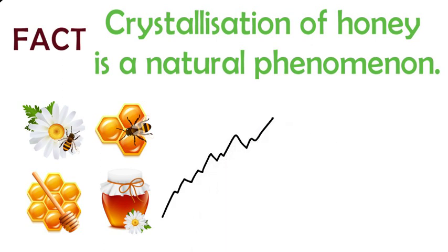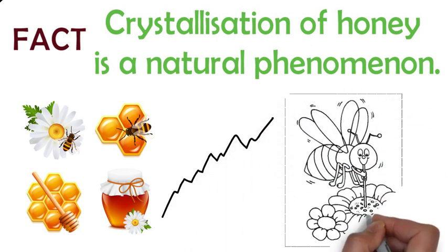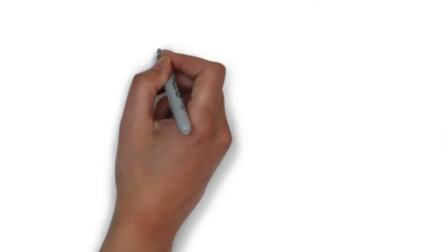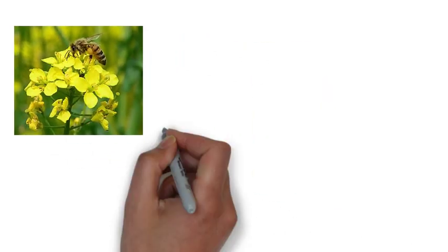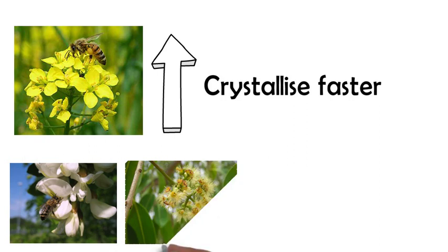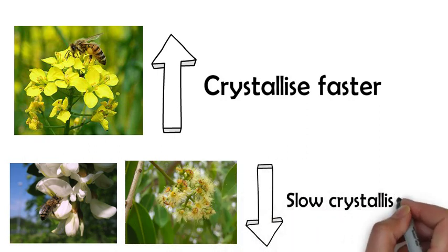The speed of crystallization depends on the source of flower from which honey bees collect nectar. For example, if honey bees collect nectar majorly from mustard flower, the honey is likely to crystallize faster, where acacia and jamun flower honey take several months or longer to crystallize.